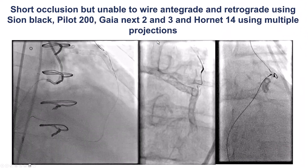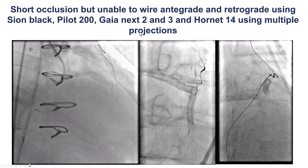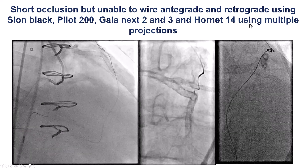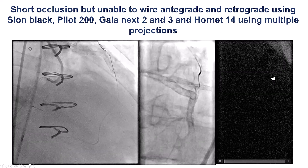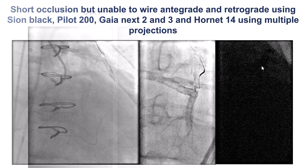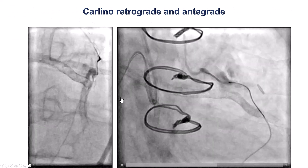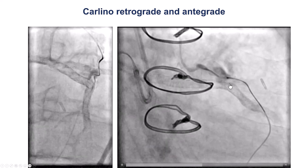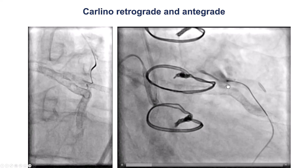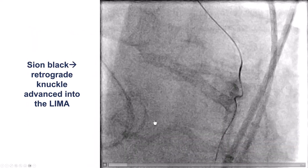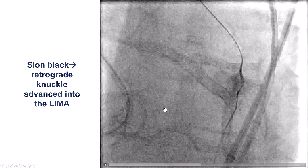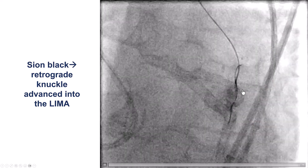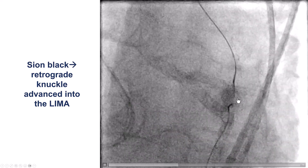It was extremely challenging to cross that segment. We used multiple stiff guidewires — Gaia X2, Gaia X3, Hornet 14 — in multiple projections, but were unable to cross that short segment of occlusion. We decided to do the Carlino technique, both through the antegrade microcatheter in the LIMA and the retrograde microcatheter coming through the septal. After multiple attempts, we were able to advance a retrograde Corsair knuckled guidewire that tracked along the course of the LIMA.